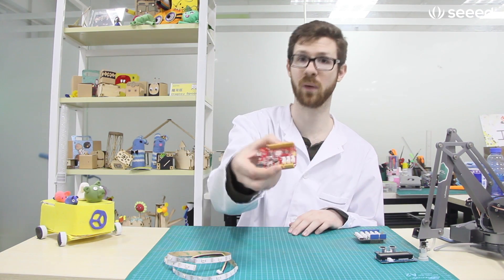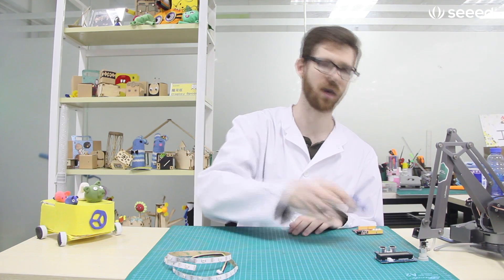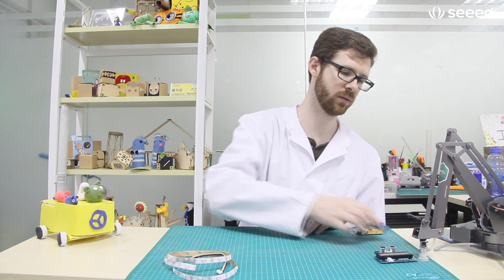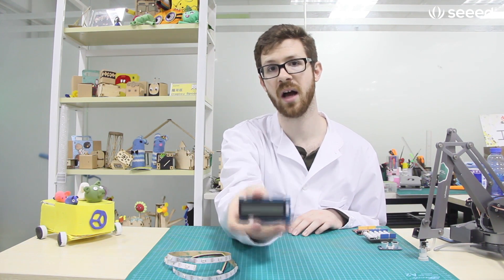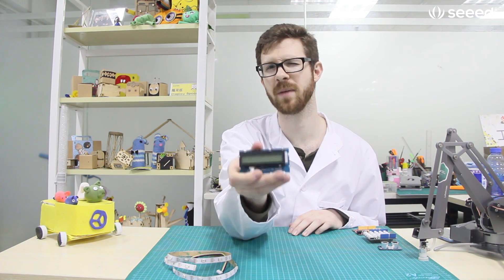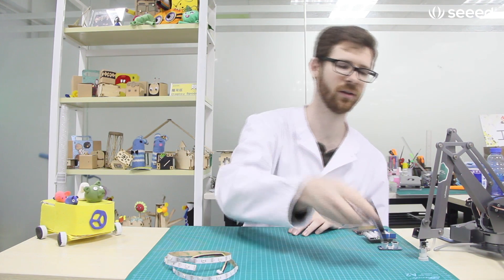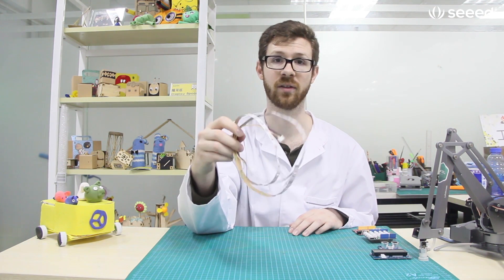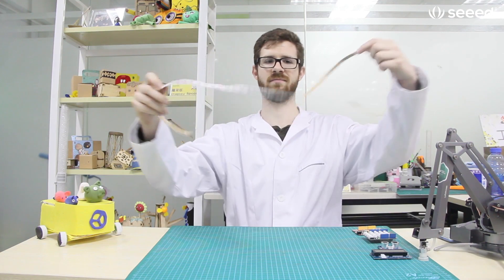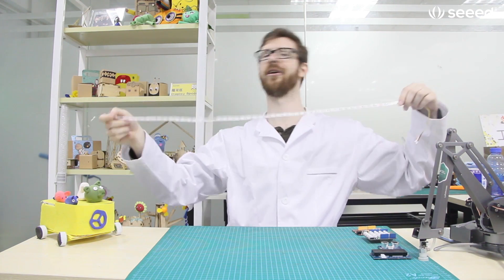Greetings from Seeed Studio. I am Seth Valde and today we have a tutorial to show you how to measure distance with our Seeeduino board, our base shield for Arduino, our Grove ultrasonic ranger, our Grove LCD display which has an RGB backlight, and our digital RGB LED flexi strip which has 30 LEDs over one meter.